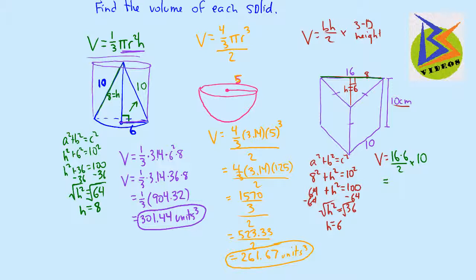And so then we take 16 and multiply it by 6, and we get 96 divided by 2, multiplied by 10. And 96 divided by 2 is 48. And 48 times 10 is 480, again, units cubed, or cubic units. And there are three different kinds of shapes that we can find the volume of. Some of them we needed the Pythagorean theorem.